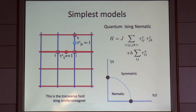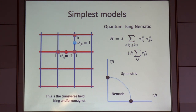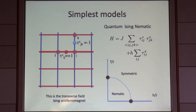I can make this problem quantum mechanical by introducing a non-commuting operator — turning on a transverse field, the same sort of transverse field that Ian was talking about yesterday. This gives the problem quantum dynamics, and this is just the transverse field Ising antiferromagnet. Its phase diagram is again very well known: there is a nematic phase, a symmetric phase, and a quantum critical point. Everything about this problem is really understood.